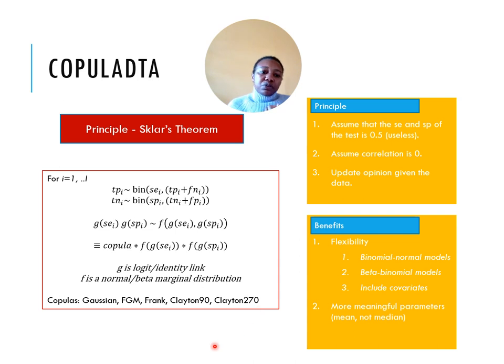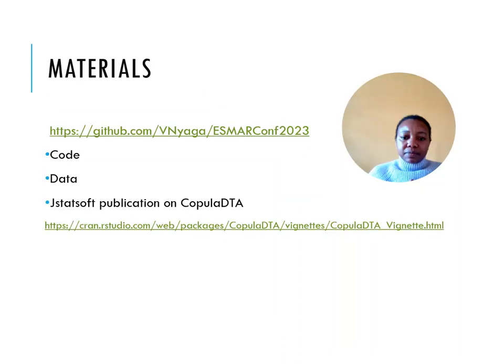With more data, you can also include covariates in the model. The code and the data used in this presentation is in my data repository and the link. Here is the link. There is also a paper and a vignette with more details and demos on CopulaDTA. Thank you for listening.